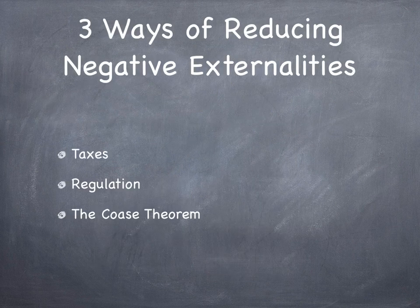There are three ways of reducing negative externalities. First is taxes, second is through regulation, and third is through the Coase Theorem.